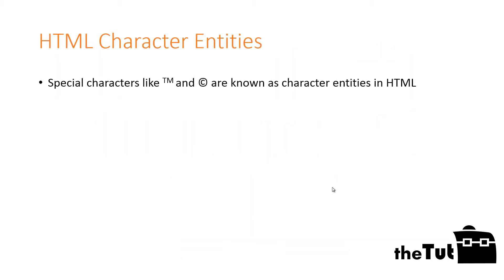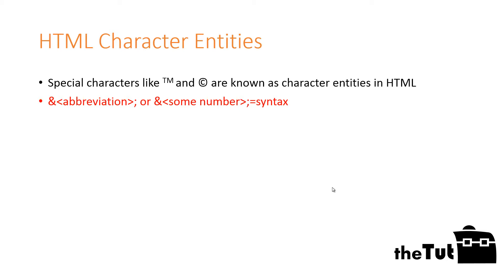Special characters, like the copyright or trademark symbols, are known as character entities in HTML. Start the character entity with an ampersand and end it with a semicolon, with either an abbreviated name or a number in between.